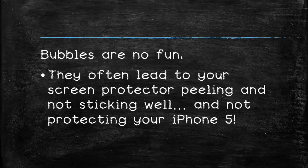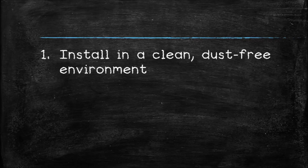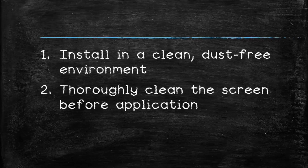So to avoid getting these bubbles on your glass, here's the process to follow. First of all, make sure you are installing the screen protector in a clean, dust-free as possible environment. Thoroughly clean the phone's glass with a microfiber cloth to ensure no lint or dust particles are left on the screen. Oftentimes I'll even blow on the screen after I'm done cleaning it with a cloth just to ensure nothing's left.